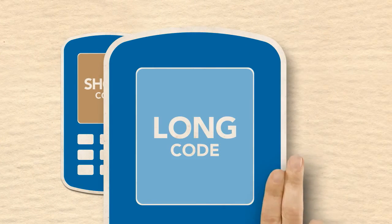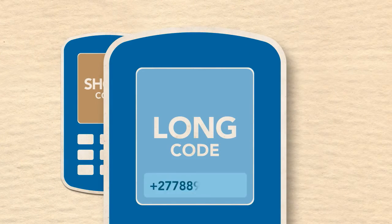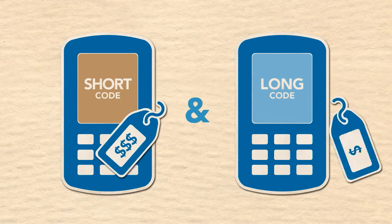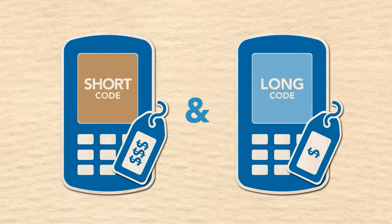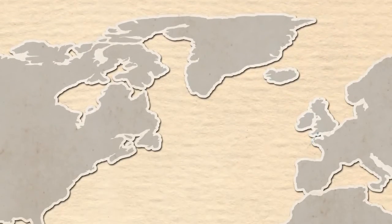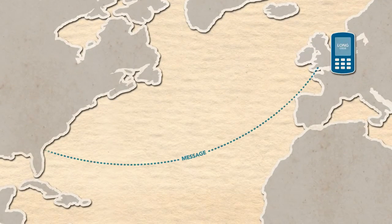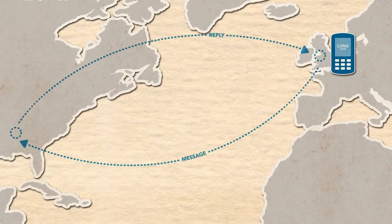Long codes, like their name implies, are long telephone numbers which can be up to 16 digits in length, but are usually the length of a standard telephone number. Long codes are cheaper to use than short codes and allow you to receive replies from local and selected international destinations.